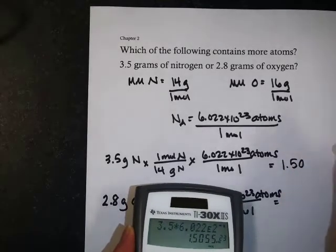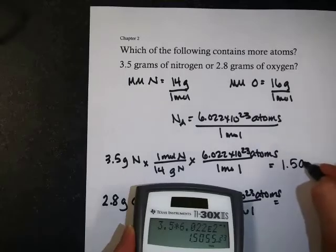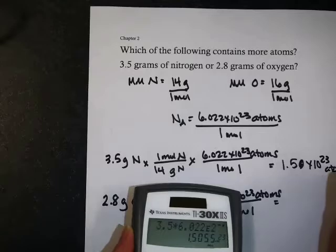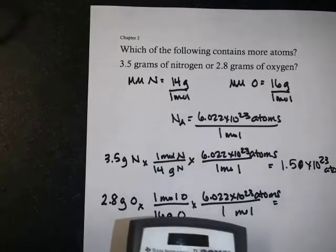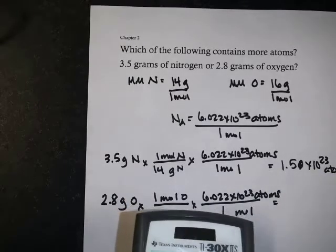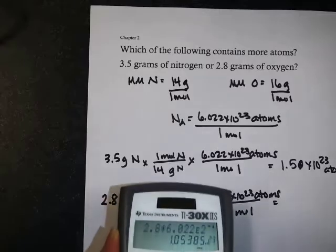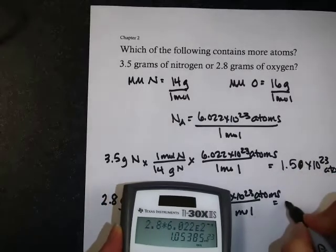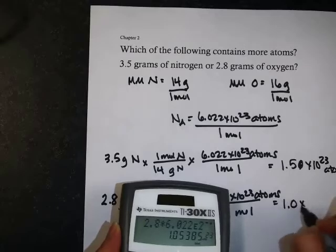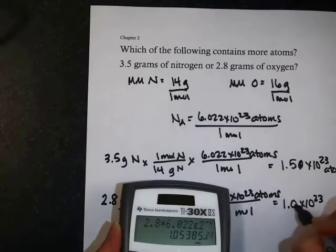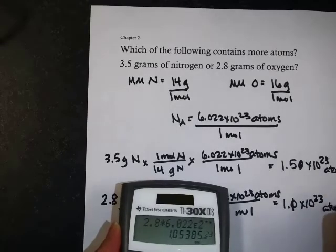I only need two sig figs. Let me cross that out there. 1.5 times 10 to the 23rd for nitrogen. And 1.05, which is really one point, I probably should have rounded that up to, yeah, 1.1 times 10 to the 23rd for atoms.